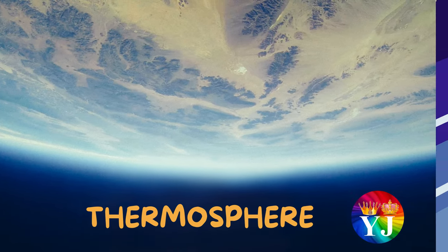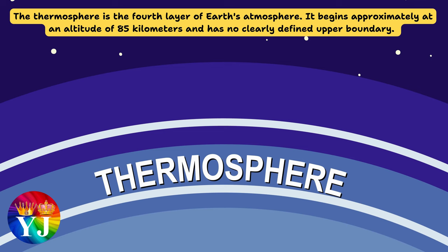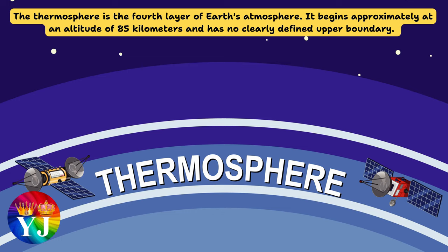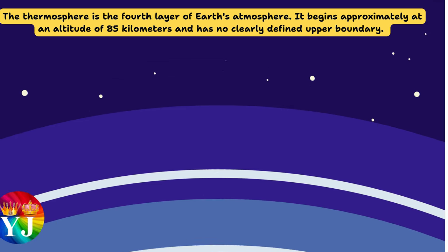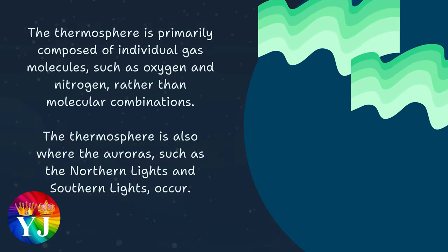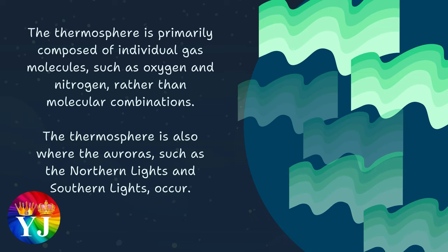The thermosphere is the fourth layer of Earth's atmosphere. It begins approximately at an altitude of 85 kilometers and has no clearly defined upper boundary. The thermosphere is primarily composed of individual gas molecules, such as oxygen and nitrogen, rather than molecular combinations. The thermosphere is also where the auroras, such as the northern lights and southern lights, occur.